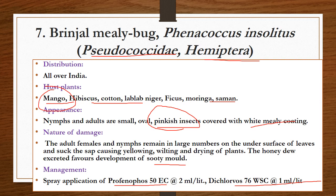Brinjal mealybug, Planococcus insolitus, belongs to the family Pseudococcidae, order Hemiptera. It is distributed all over India and causes damage to mango, hibiscus, cotton, lablab, ficus, moringa, and salmon. It is also one of the important pests in case of brinjal. Both stages cause the damage. The nymphs and adults are small, oval, pinkish in color — also called pink mealybug — and are covered with a white mealy coating. Adult females and nymphs remain in large numbers on the undersurface of the leaves, sucking the sap and causing yellowing, wilting, and drying of the plants. Honeydew excreted favors the development of sooty mold. Management includes spraying profenophos 50 EC at 2 ml per liter and dichlorvos at 1 ml per liter.